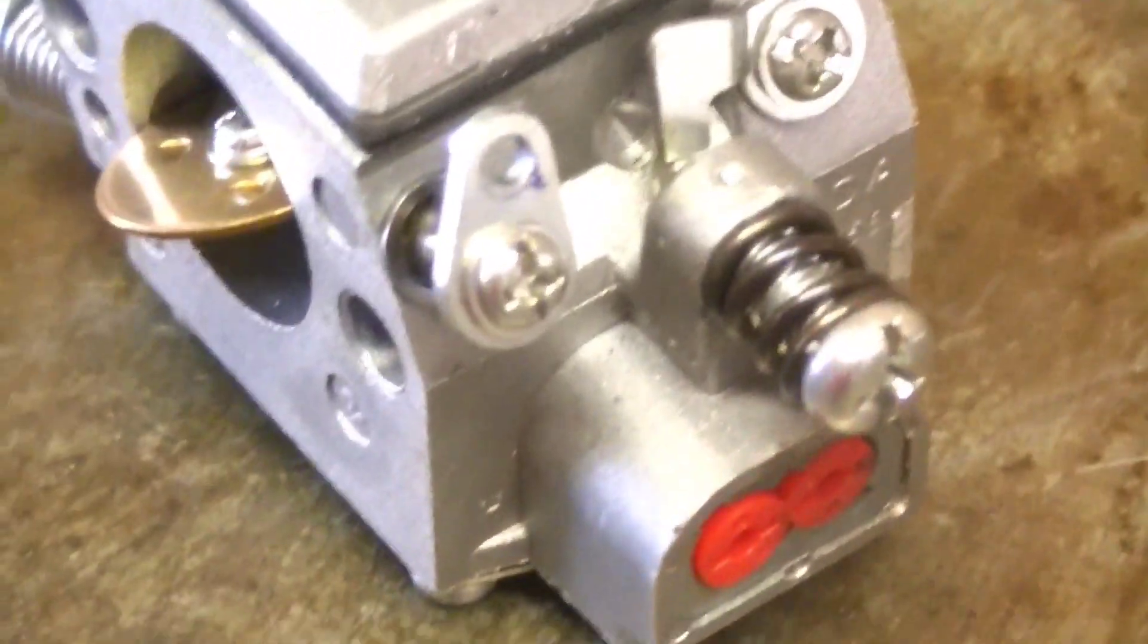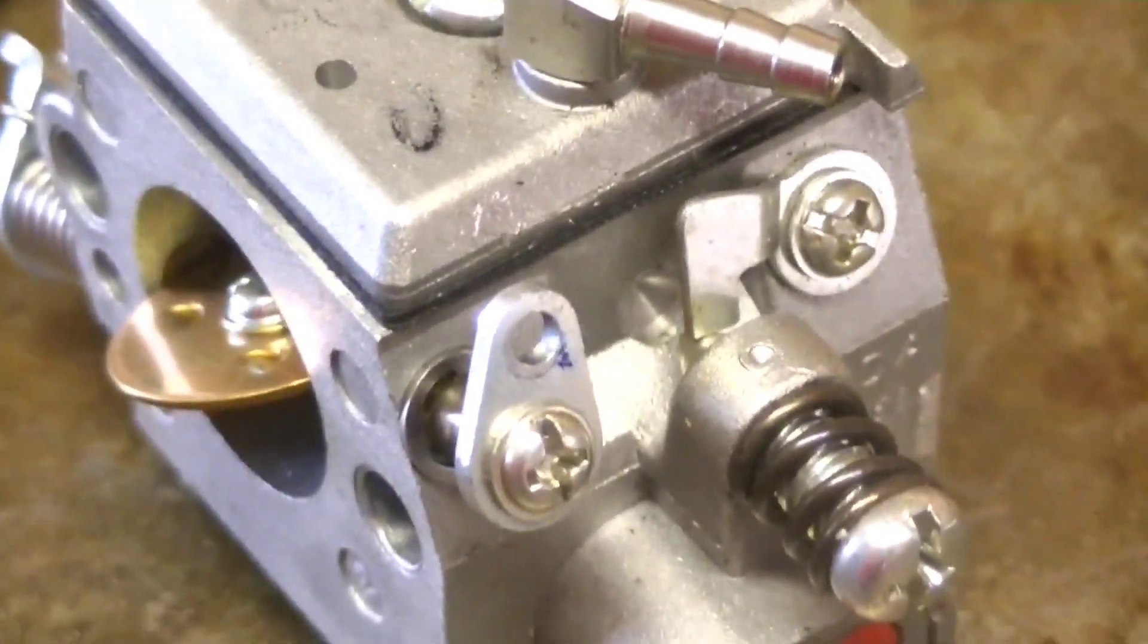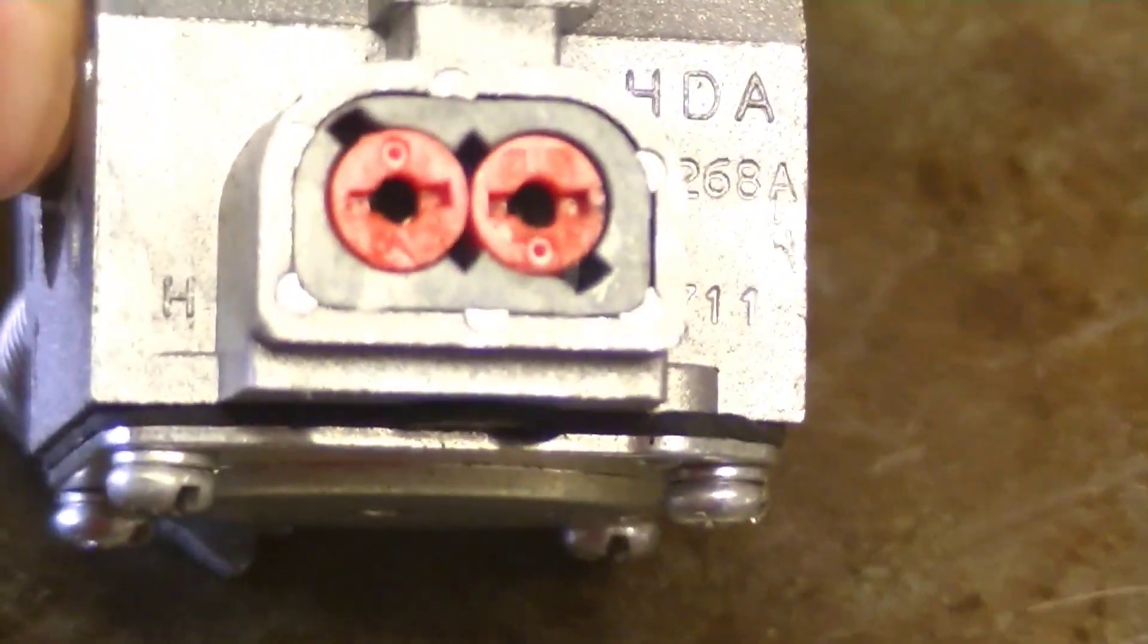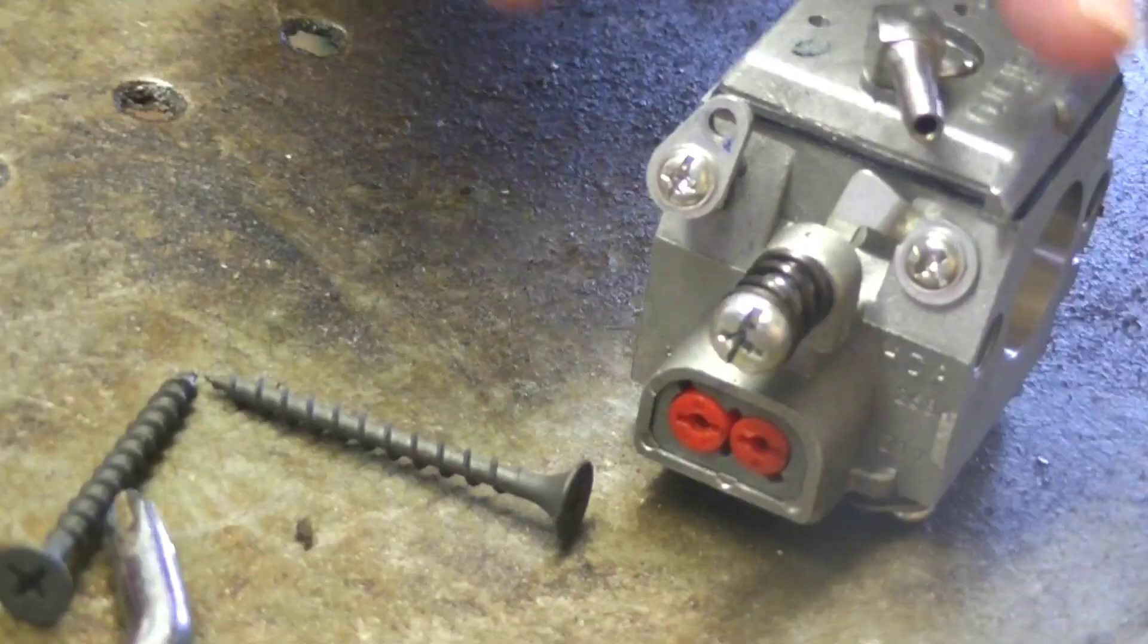And they're fairly simple to take off. This is not the carburetor off my CS590. This is one that I got earlier today. And it's pretty simple. So, I'm going to set the camera down and show you how it's done. All right, guys.